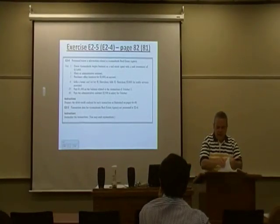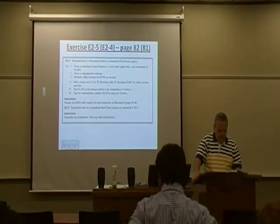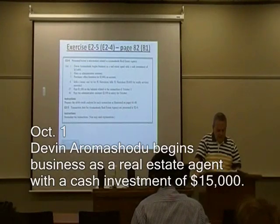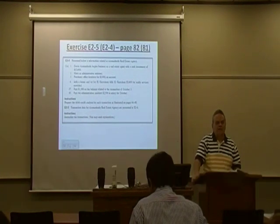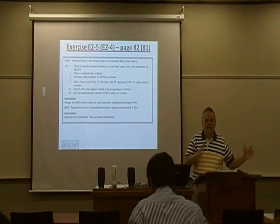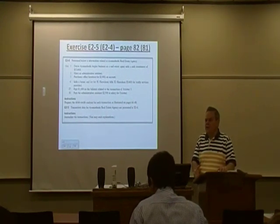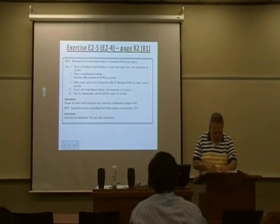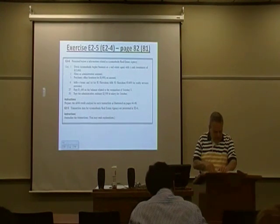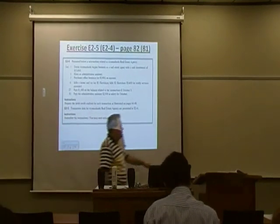At the bottom of page 81 it says: October 1st, Devin begins a business as a real estate agent with a cash investment of $15,000. In my attempt to connect this week with last, I would like you to say the accounting equation for me right this minute. Assets equals liabilities plus owner's equity. I would like one of you to think about this transaction — Devin invested in the business — and tell me how that transaction would affect the accounting equation.